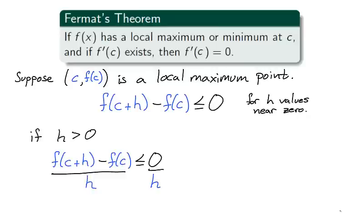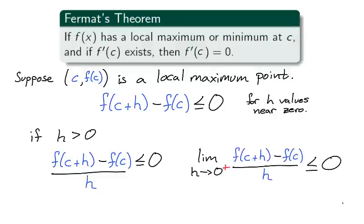If h is greater than zero, then we can divide by h without changing the inequality. Since this inequality holds for h values greater than but close to zero, we can take the limit as h approaches zero from the right. And this limit will be non-positive because the limit as h goes to zero of the function zero is zero.